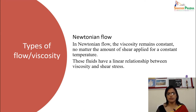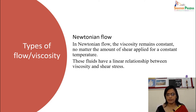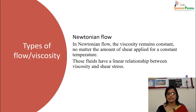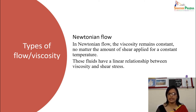Next, we will see different types of flow. In Newtonian flow, the viscosity remains constant no matter the amount of shear applied at a constant temperature. These fluids have a linear relationship between viscosity and shear stress. Examples of Newtonian flow include water, mineral oil, gasoline, and alcohol.